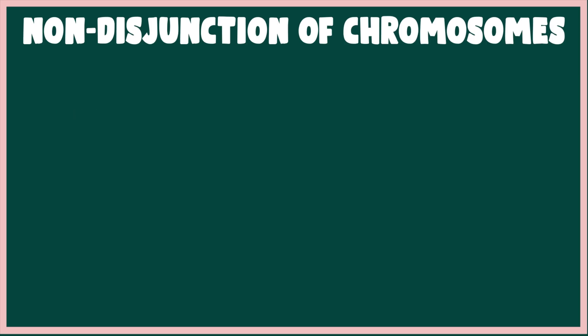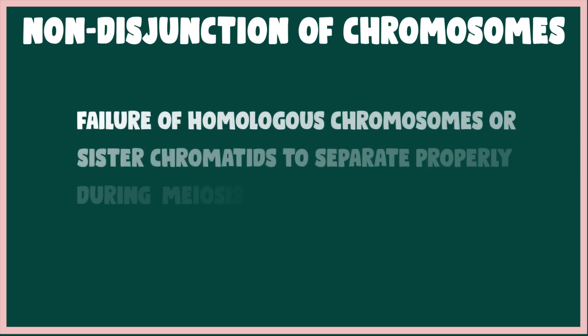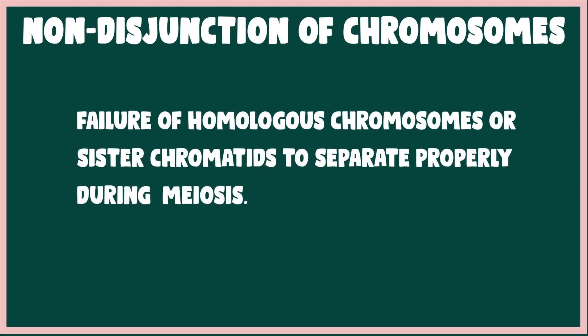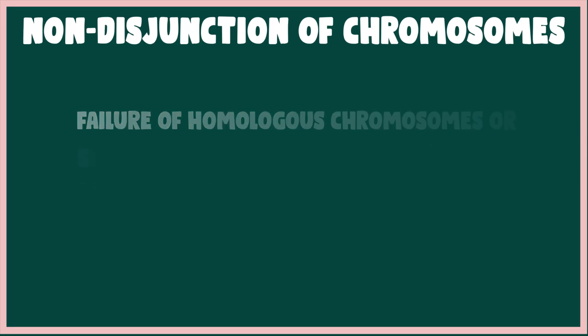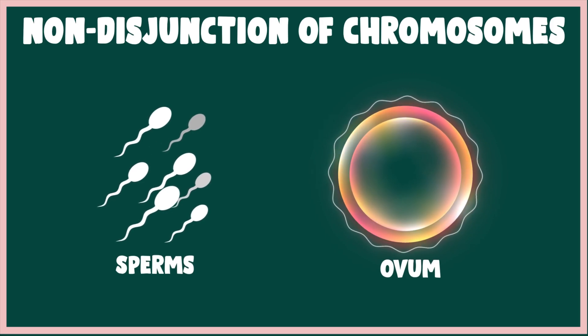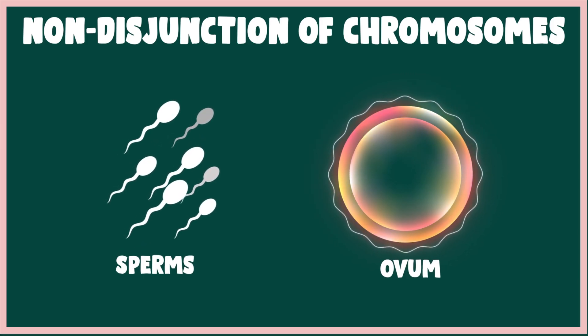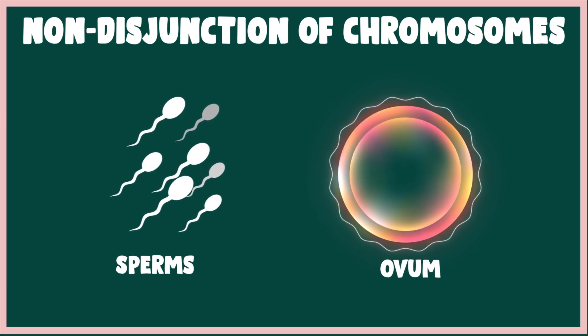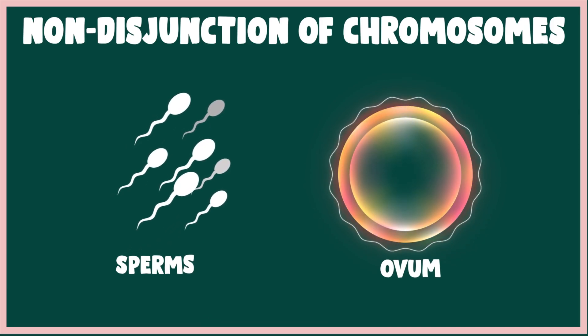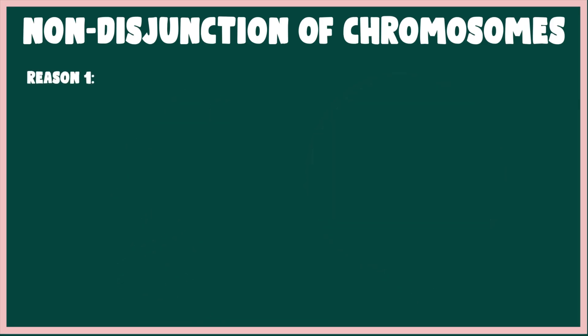Non-disjunction of chromosomes is the failure of separation of homologous chromosomes or sister chromatids during different stages of meiosis — either meiosis 1 or meiosis 2. As meiosis is the process responsible for formation of gametes, non-disjunction of chromosomes can lead to formation of abnormal gametes having an abnormal number of chromosomes.